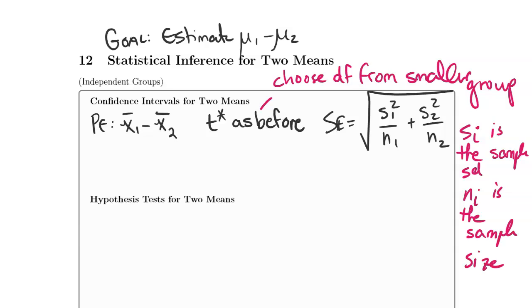Our confidence interval, as usual, is the point estimate minus the multiplier times the standard error up to the point estimate plus the multiplier times the standard error.